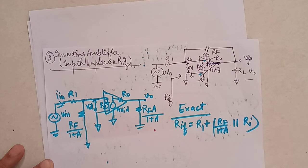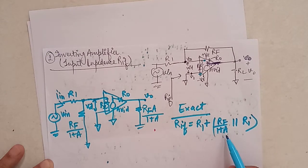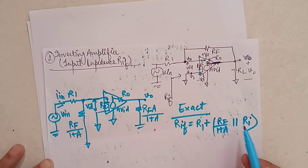But here you can see A is very very large, so this term will become very small. So this is very small.